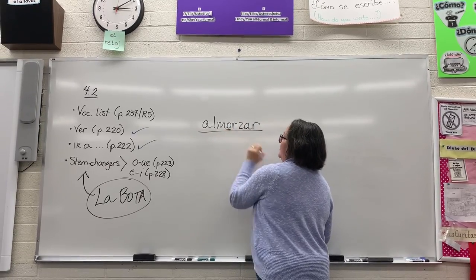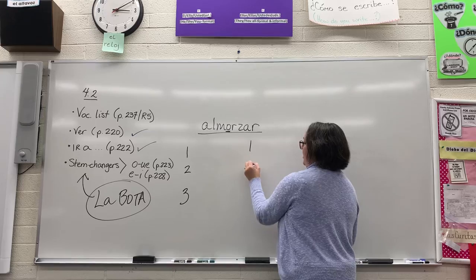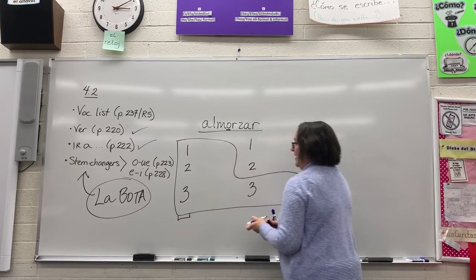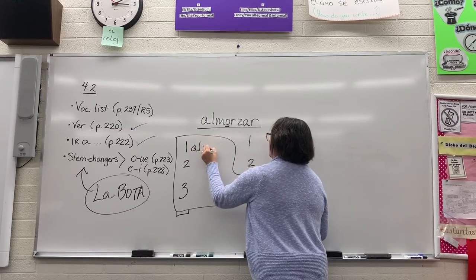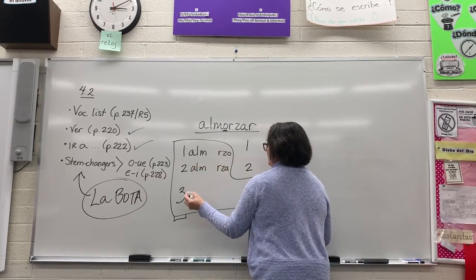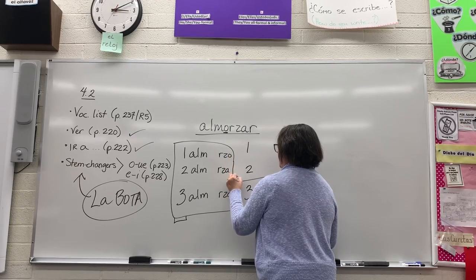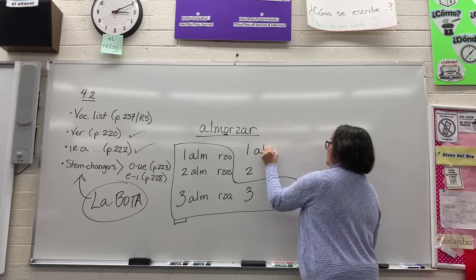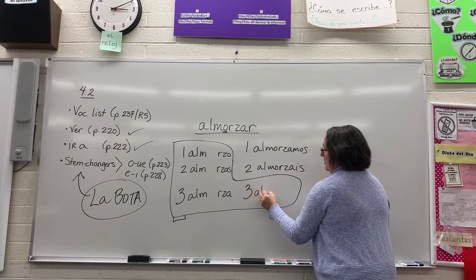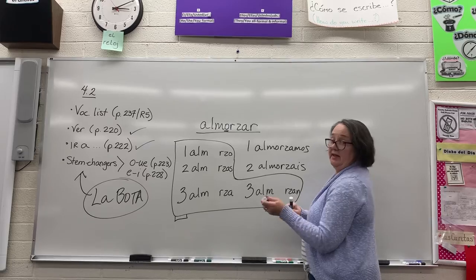And this little guy, the 'o,' goes to a 'ue.' So if I put it in my little boot form, my ugly little boot, then I will... okay, so as you know, inside the boot that's where that stem change is going to happen.